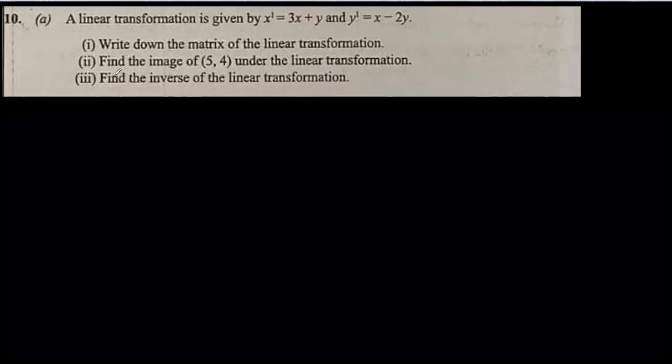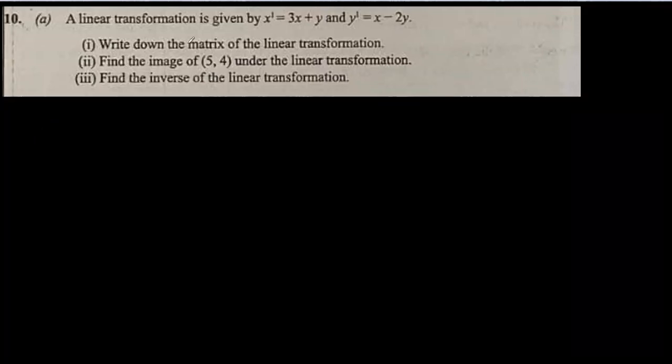Part A: A linear transformation is given where x prime is 3x plus y and y prime is x minus 2y. First, we need to write down the matrix for the linear transformation.